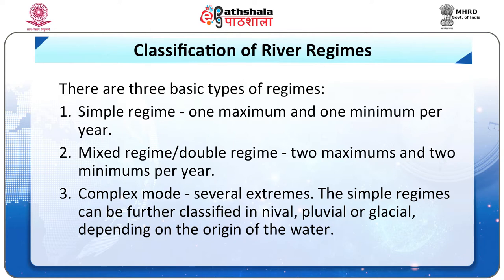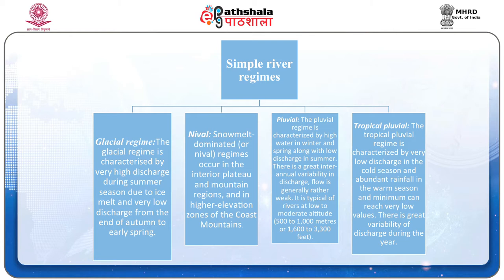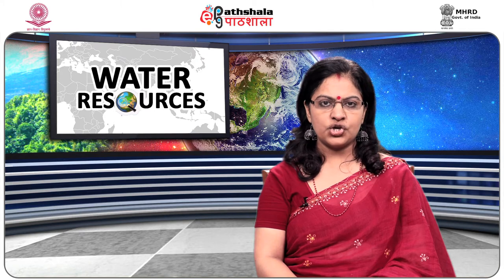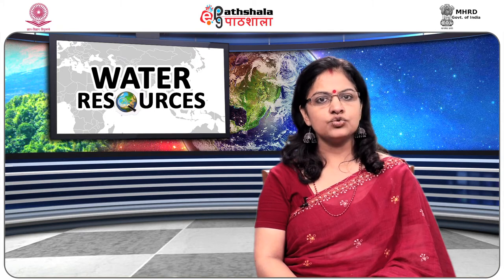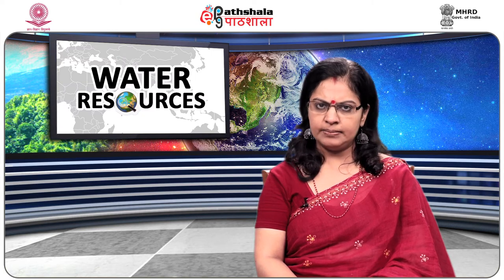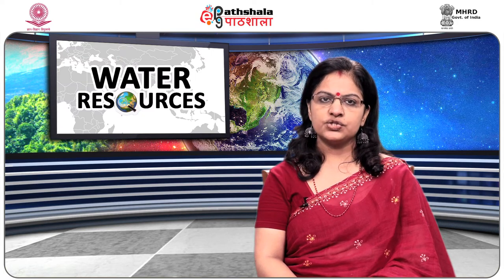The glacial river regime is characterized by very high discharge during summer due to ice melt and very low discharge from the end of autumn to early spring. The amplitude of monthly variation of discharge is greater than 25 in a glacial regime. Very high daily variability in discharge is found during the year; mostly such regimes are found at high altitudes above 2,500 meters.